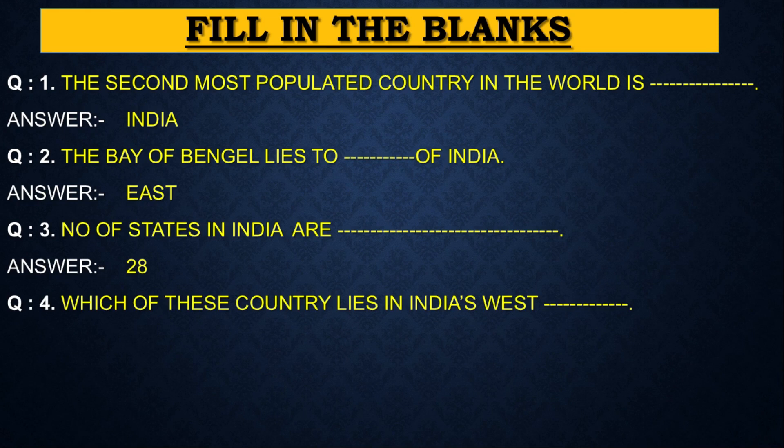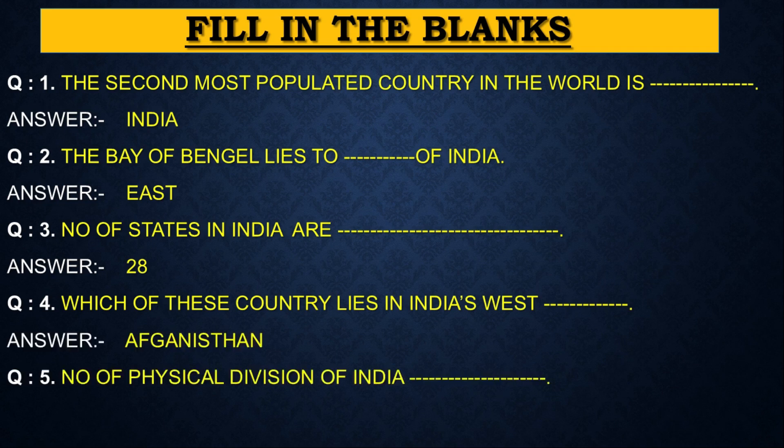Next question: Which of these countries lies to India's west? Answer: Afghanistan. Next question: Number of physical divisions of India? Answer: 5.